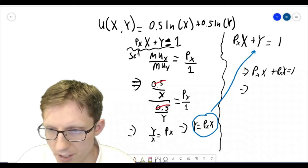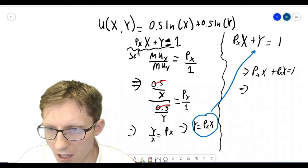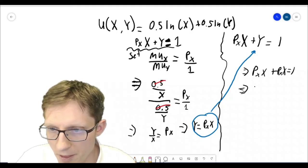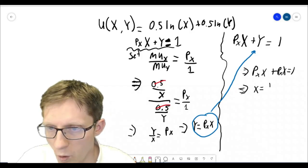Or solving a little further, the amount of good x consumed is equal to 1 over 2 times its price.